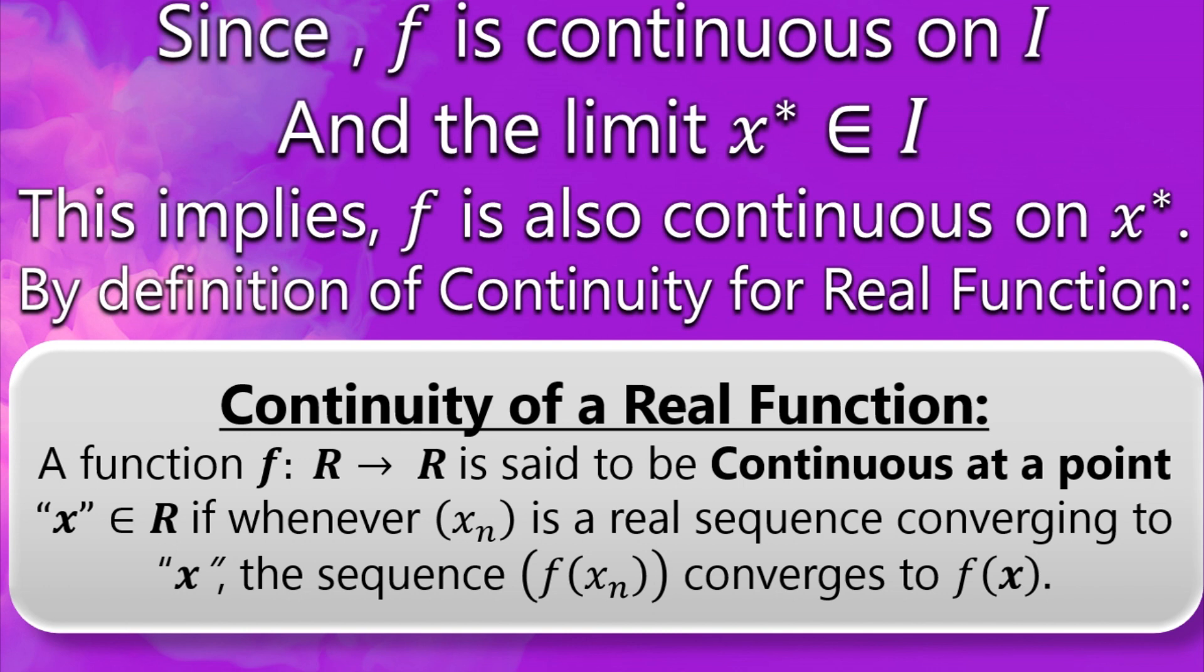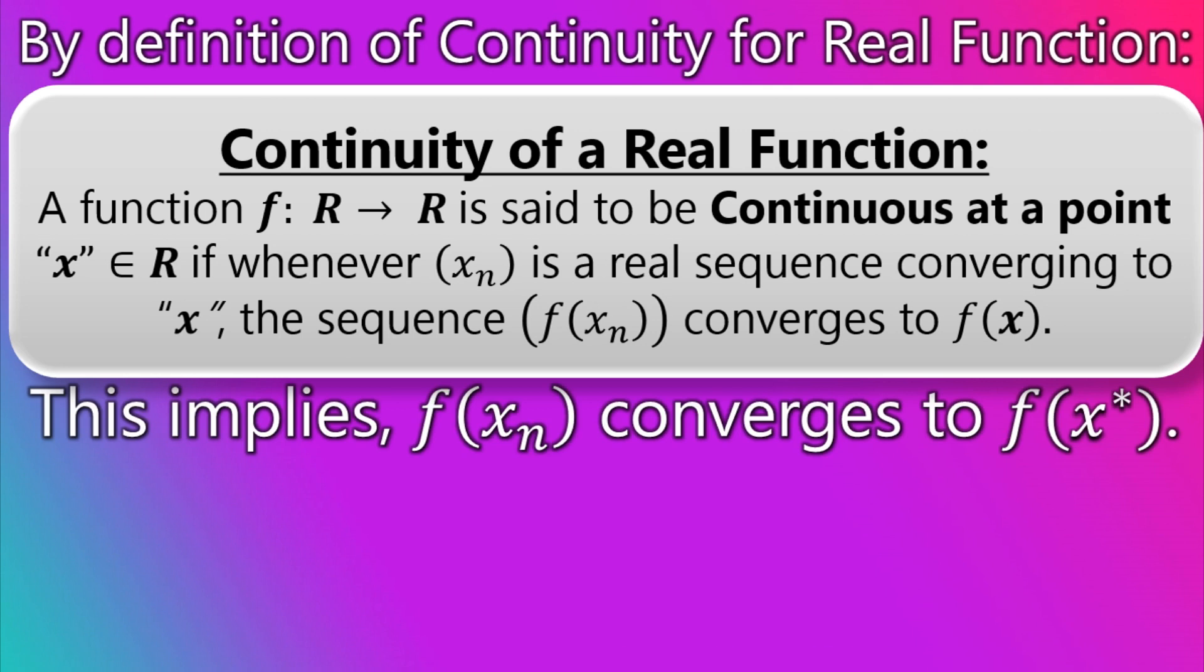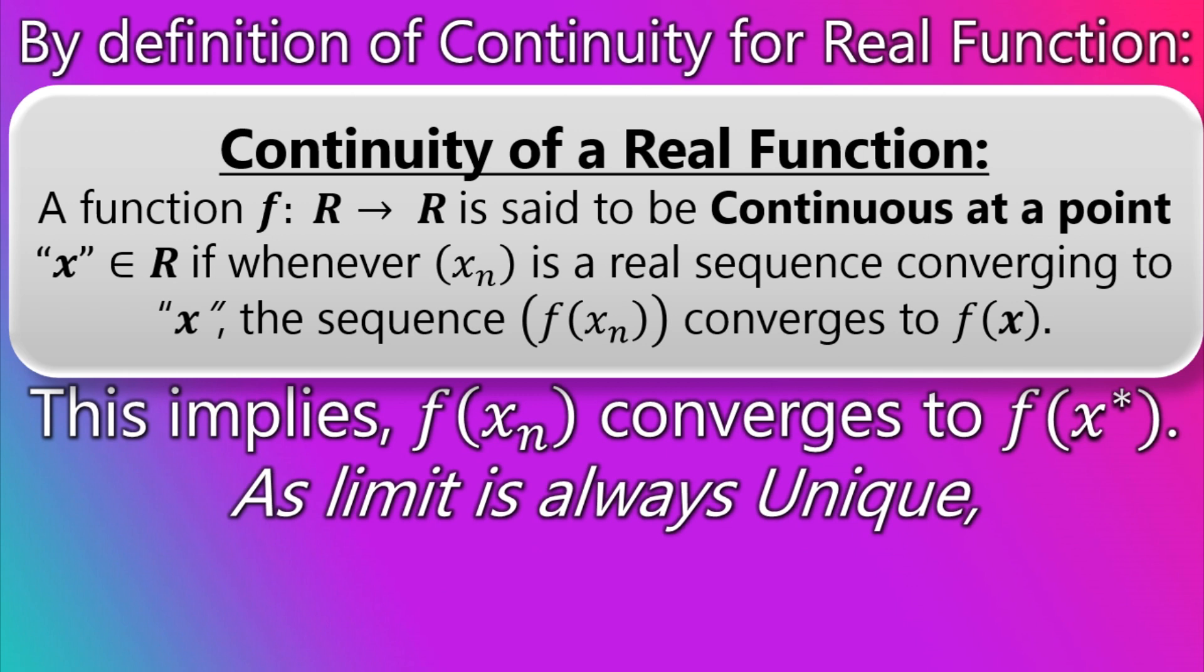So by applying the definition of continuity for real functions: a function F is said to be continuous at a point x which belongs to the set of real numbers if, whenever X_n is a real sequence converging to x, then the sequence f(X_n) also converges to f(x). From this definition we can conclude that f(x_{n_r}) also converges to f(x*).